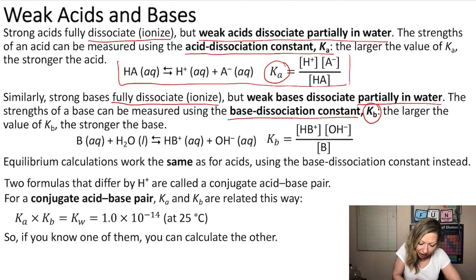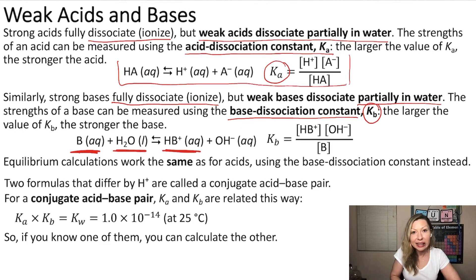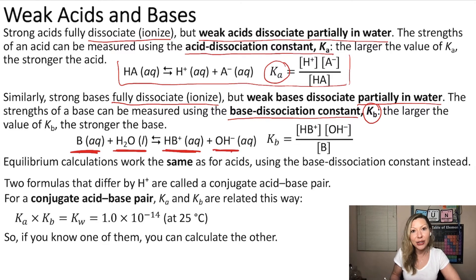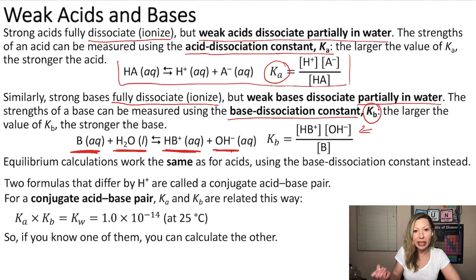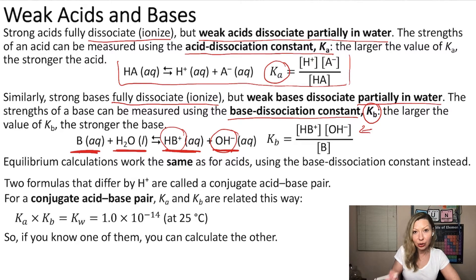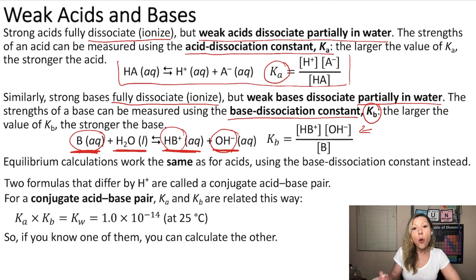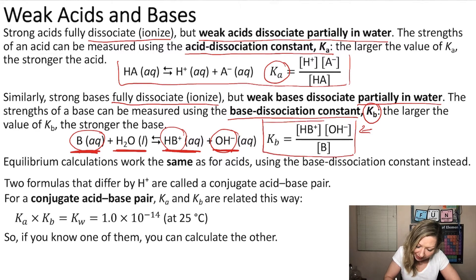Now, here we have a reaction — a weak base dissolved in water — going to give us HB plus, in this case a conjugate acid, plus OH minus, or hydroxide ion. And K sub B can be written from this expression: the products are in the numerator, so HB plus concentration multiplied by the OH minus concentration, divided by the concentration of our weak base. Water is not included because it is our solvent. So this is the expression for K sub B.